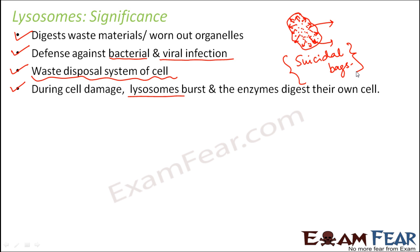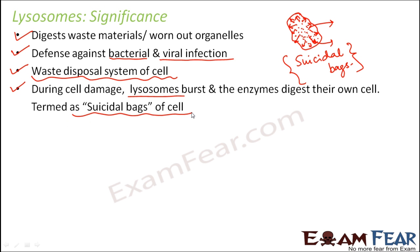Lysosomes are part of the cell and these enzymes are present inside the lysosomes. So lysosomes have advantages — it helps to get rid of waste material, acting as the waste disposal system for the cell. But at the same time, during lack of energy, these lysosomes can become the suicidal bags for the cell. That is why they are termed suicidal bags of the cell.